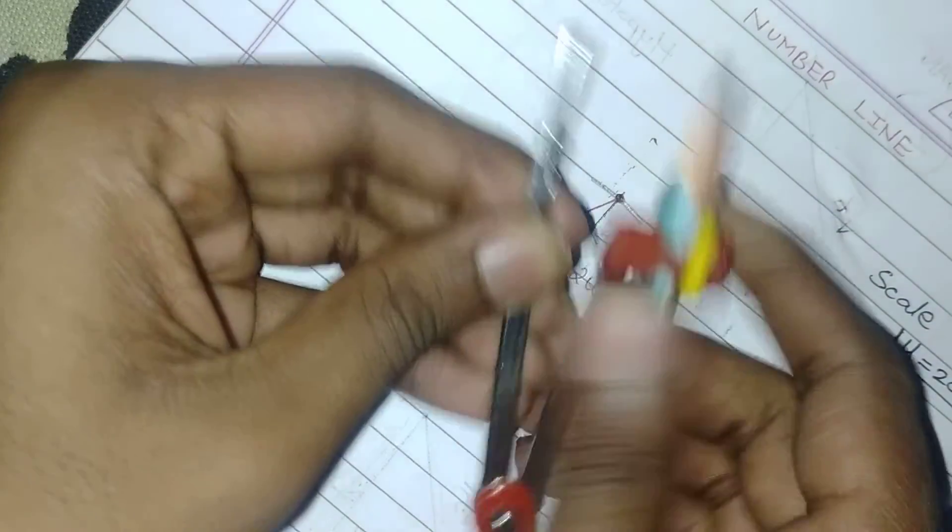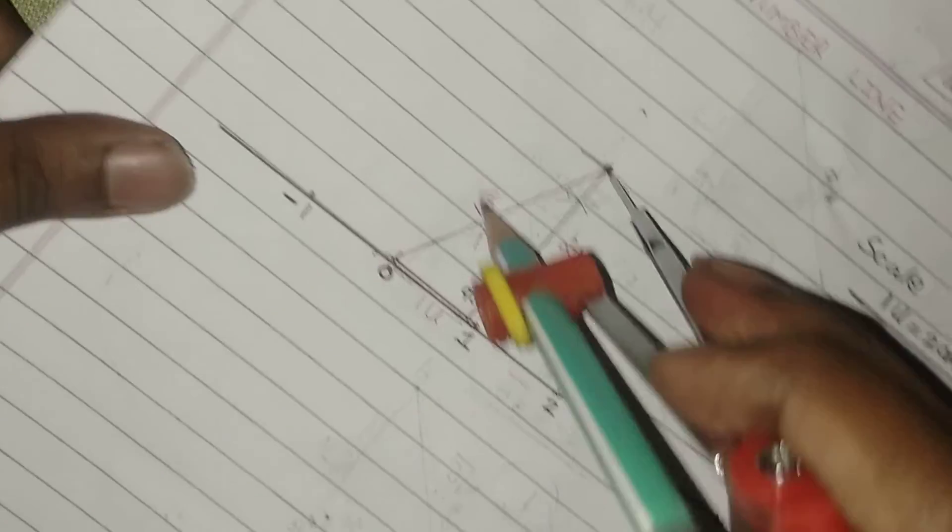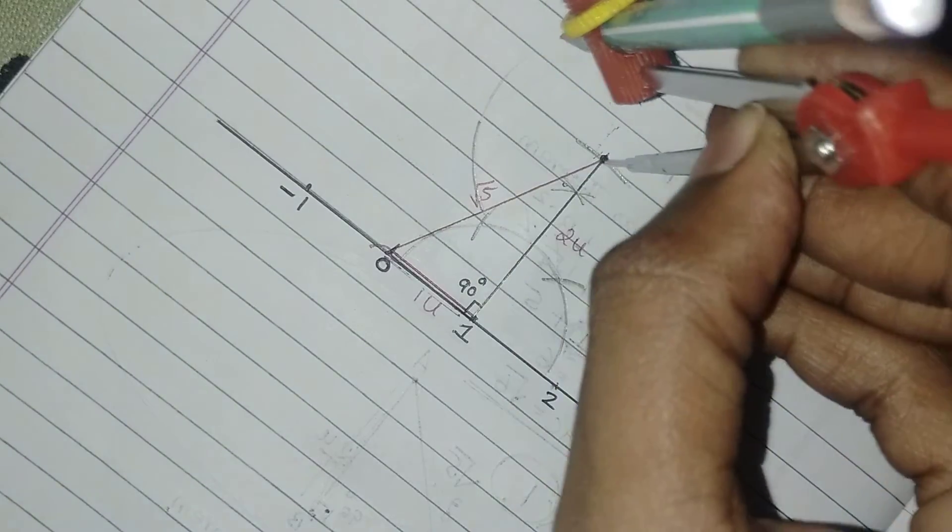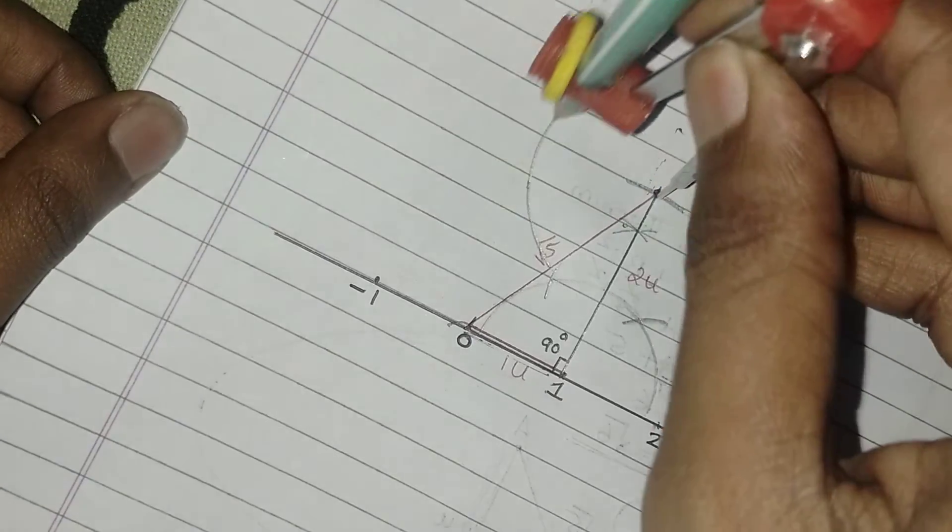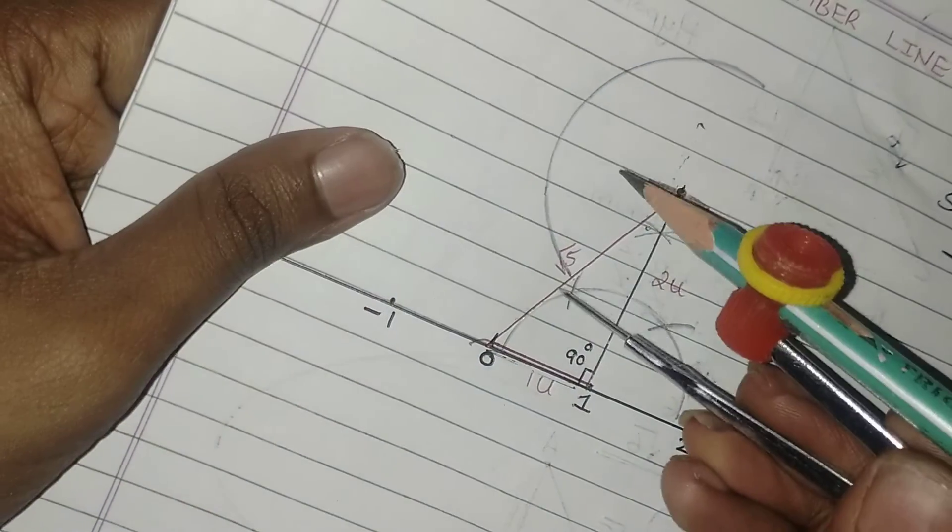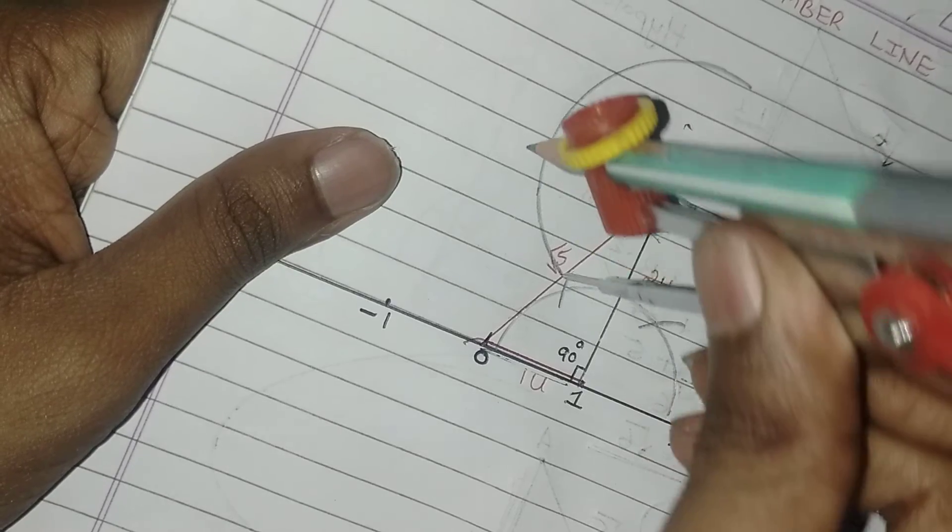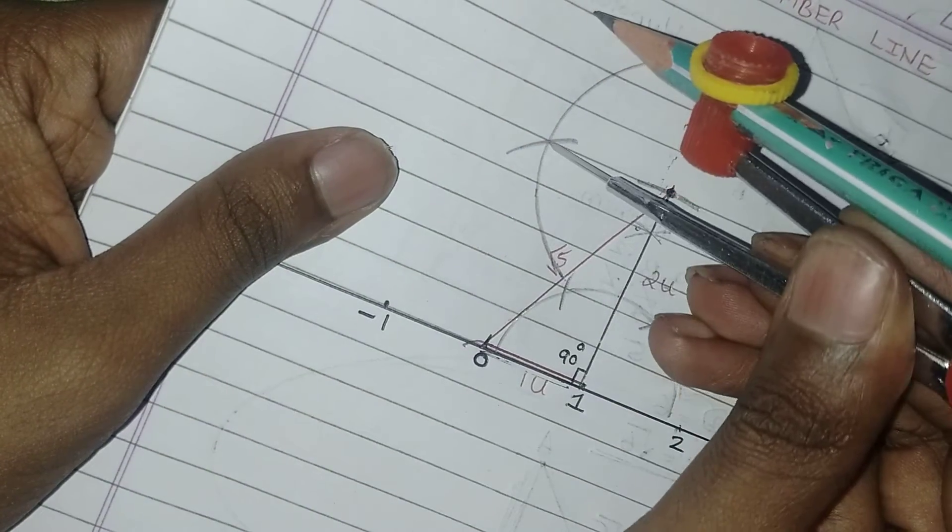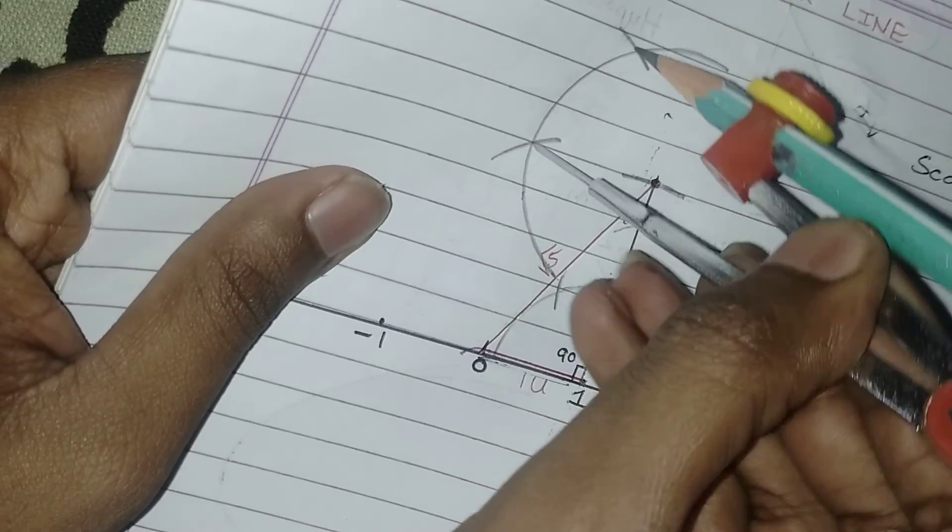Take a certain radius like this. Keep the needle here and draw the semicircle like this. After drawing a semicircle, at any one end of the semicircle, keep the needle, cut an arc. Keep the needle, cut an arc.